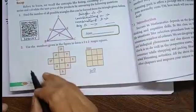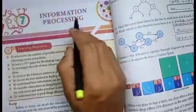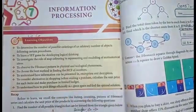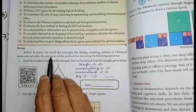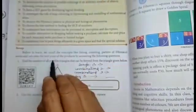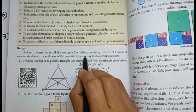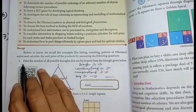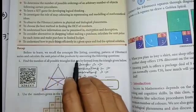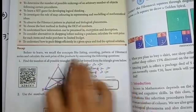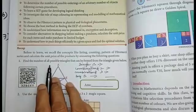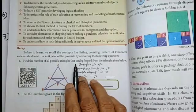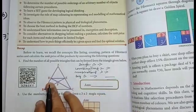Dear students, all I have to take page number 232, Information Processing. Before to learn, we recall the concept of listing, counting pattern of Fibonacci series and calculate the unit price of the products by answering the following questions. First, find the number of all possible triangles that can be formed from the triangle given below.